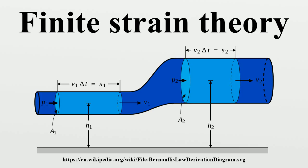The deformation gradient, like any second-order tensor, can be decomposed using the polar decomposition theorem into a product of two second-order tensors: an orthogonal tensor and a positive definite symmetric tensor. The tensor R is a proper orthogonal tensor representing a rotation; U is the right-stretch tensor and V is the left-stretch tensor. The terms right and left mean they are to the right and left of the rotation tensor, respectively. Both U and V are positive definite, i.e., and symmetric tensors of second order. This decomposition implies that the deformation of a line element may be obtained either by first stretching then rotating, or vice versa.